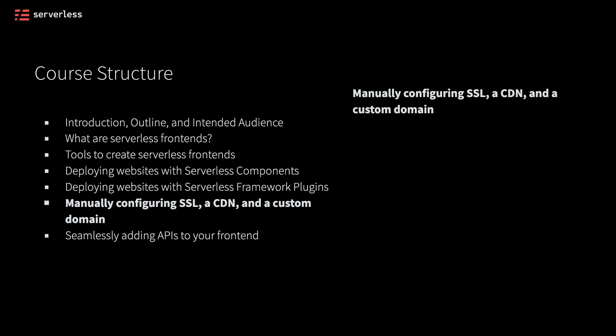In this section, we'll be looking at how we can set up a bunch of different details to improve the usability, security, and overall performance of our website. We'll start by getting a custom domain, and we'll see how we can do this process inside of Amazon Route 53.